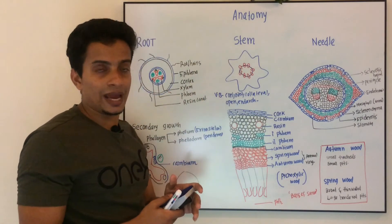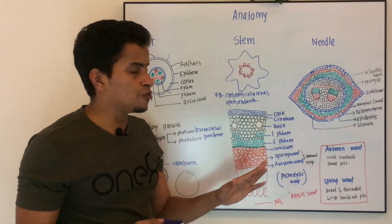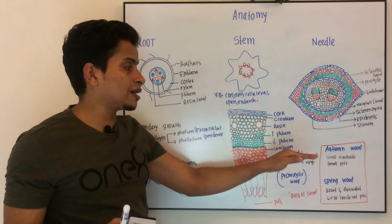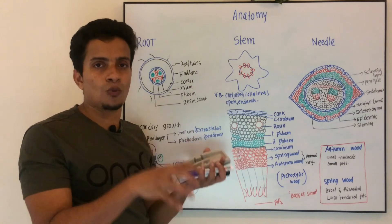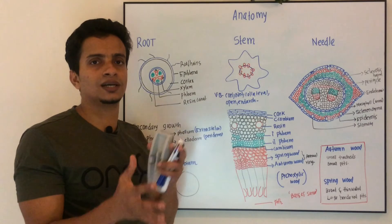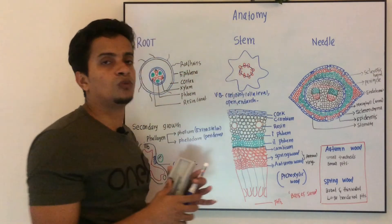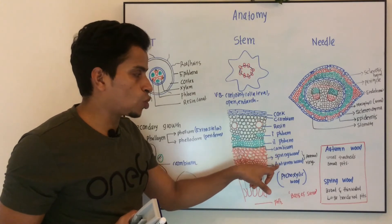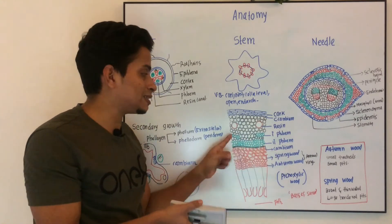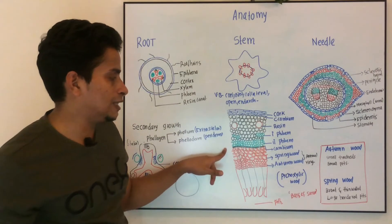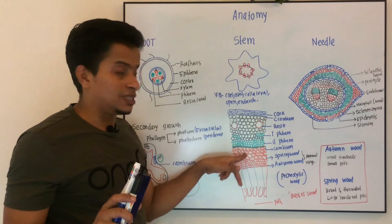A cambium ring can be seen just below that. You can see two types of xylem which are formed, which constitute an annual ring. An annual ring represents two types of wood formed in two seasons. Spring wood is formed in the spring season and autumn wood is formed in the autumn season. Together you get an annual ring.